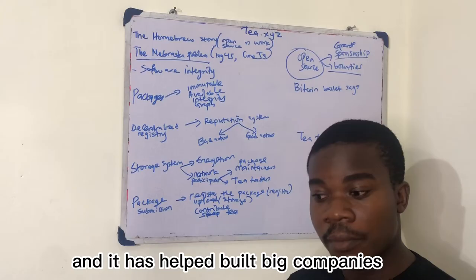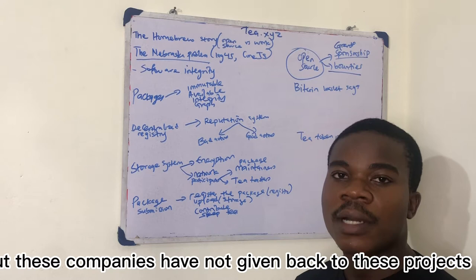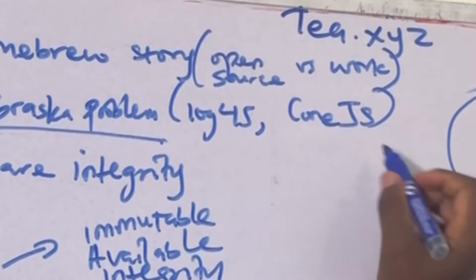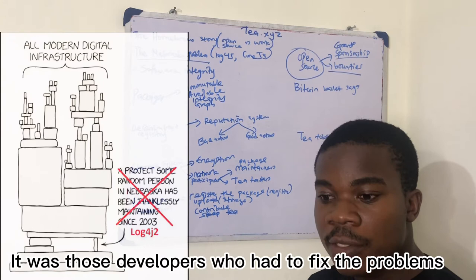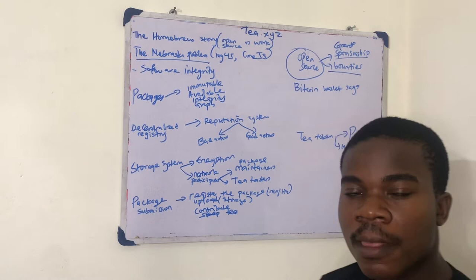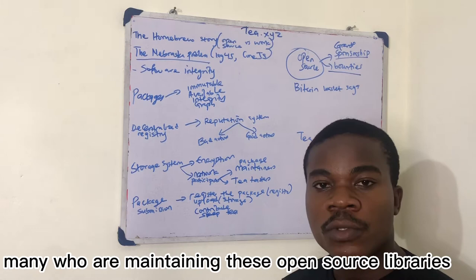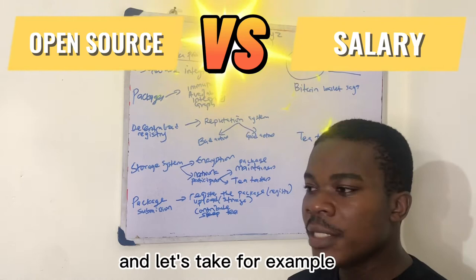The Nebraska problem is basically saying that open source software has given so much and it has built big companies, but these companies have not given back to these projects. We saw from the likes of log4j and others when they had issues, it was developers who had to fix their problems and these developers are not getting paid. So when you look at it right now, open source is actually suffering because many who are maintaining these open source libraries have to choose between their work and open source. Let's take for example you are building software by the side.